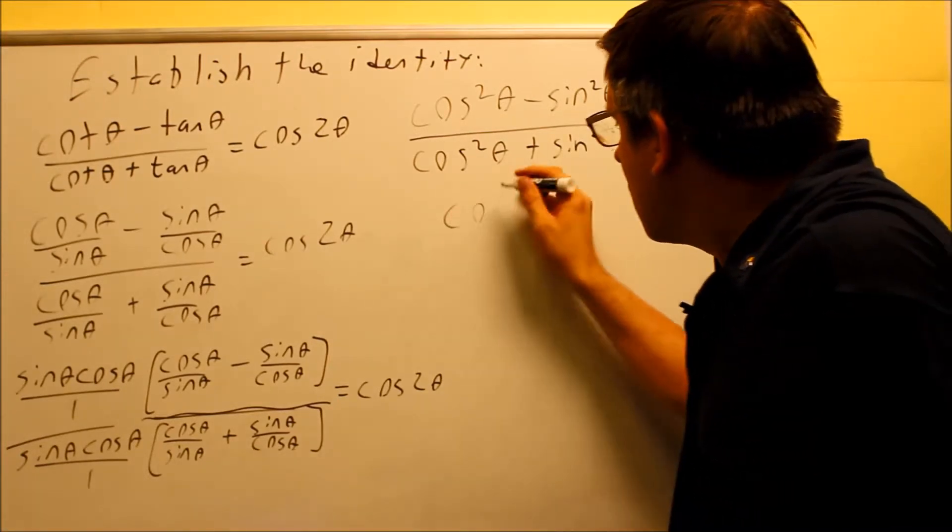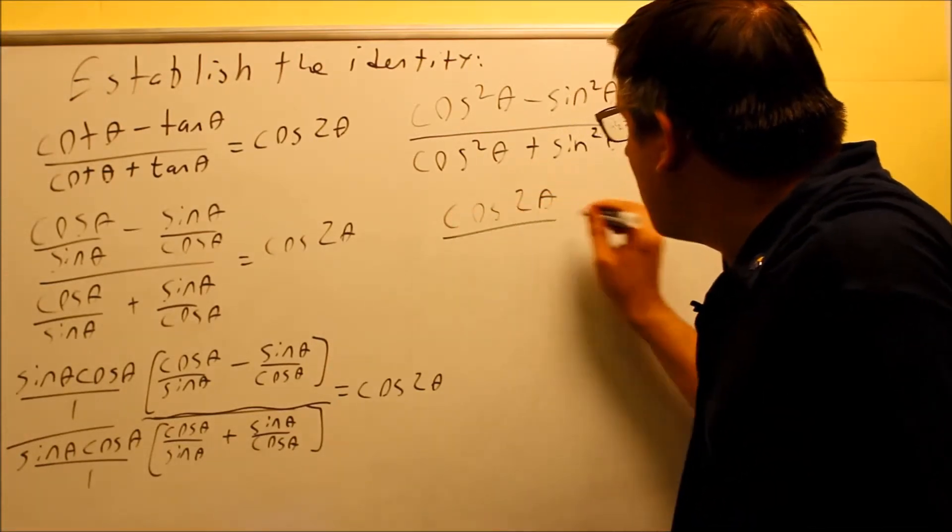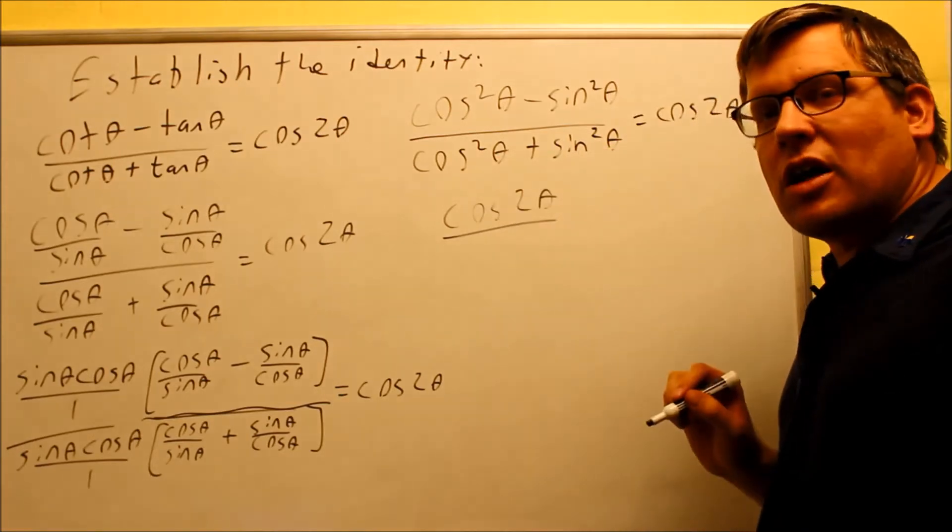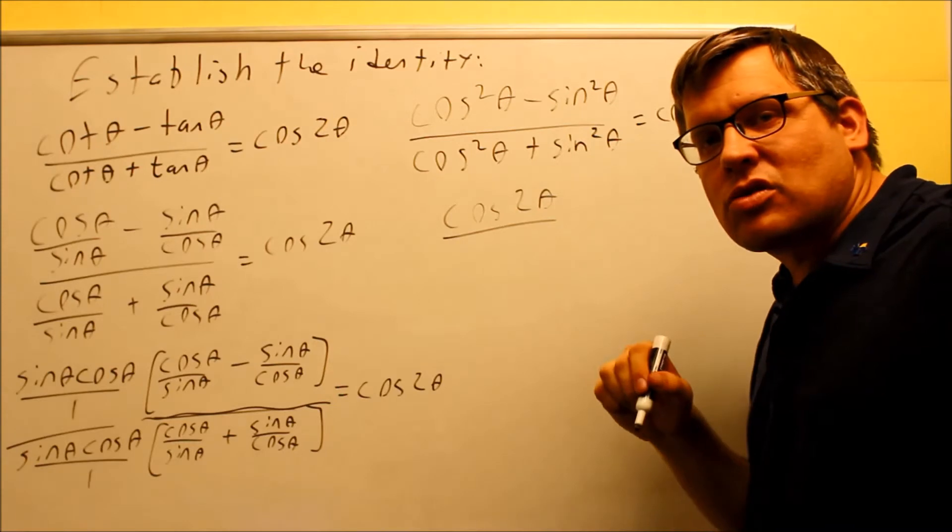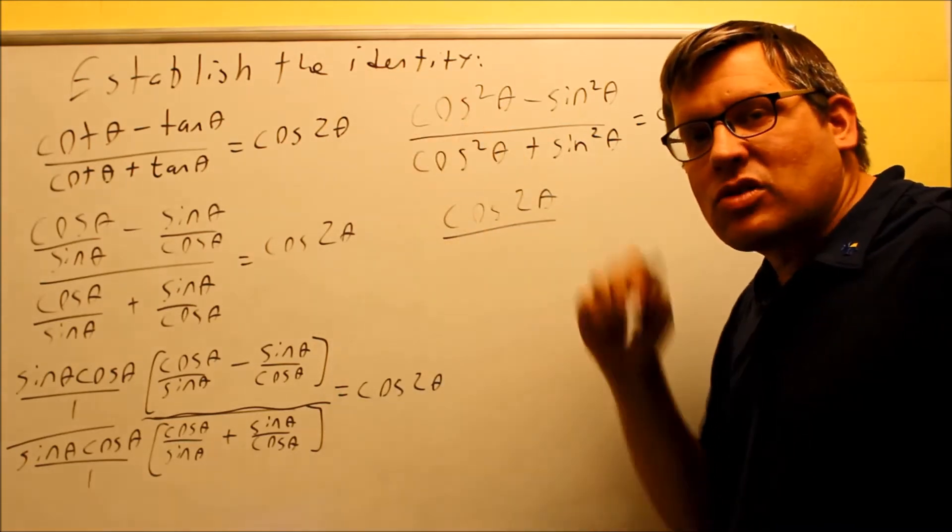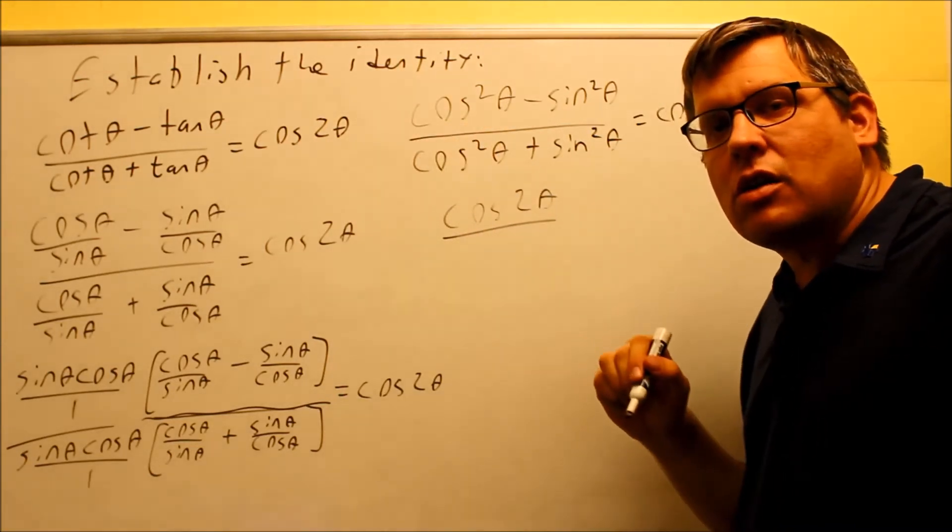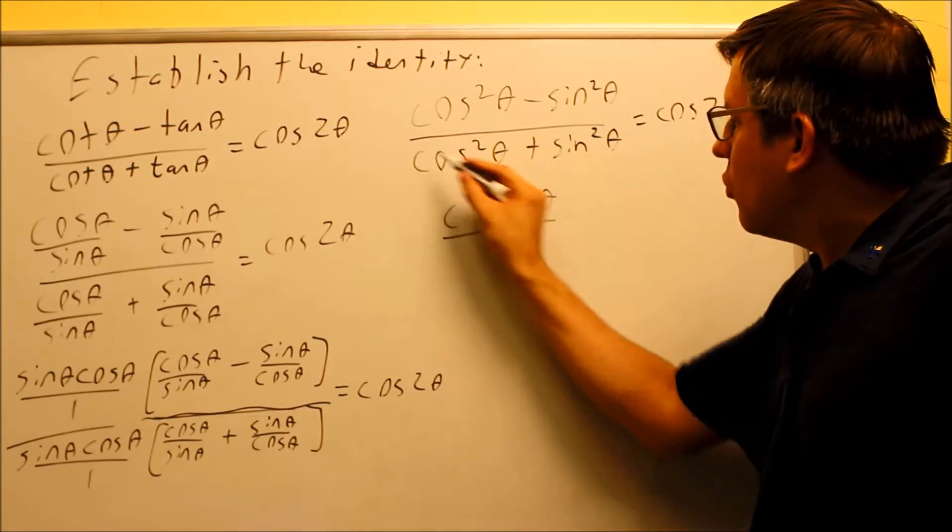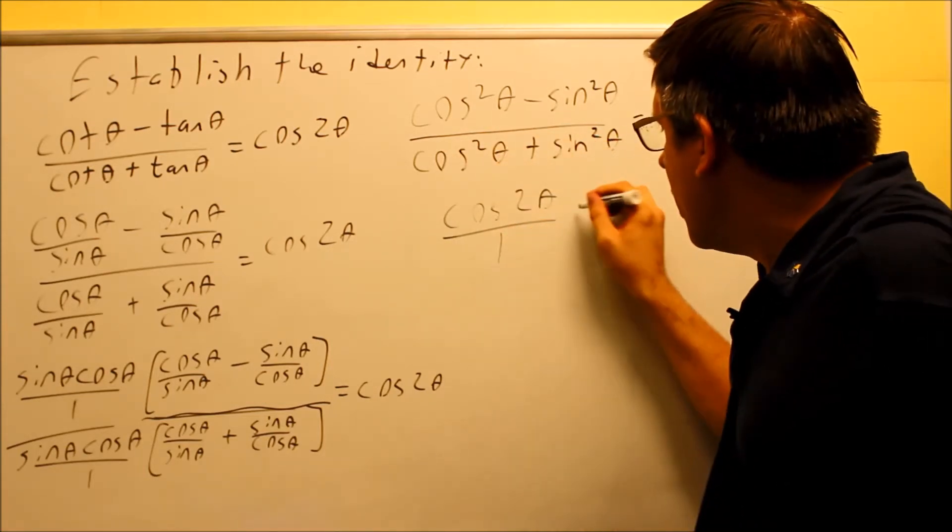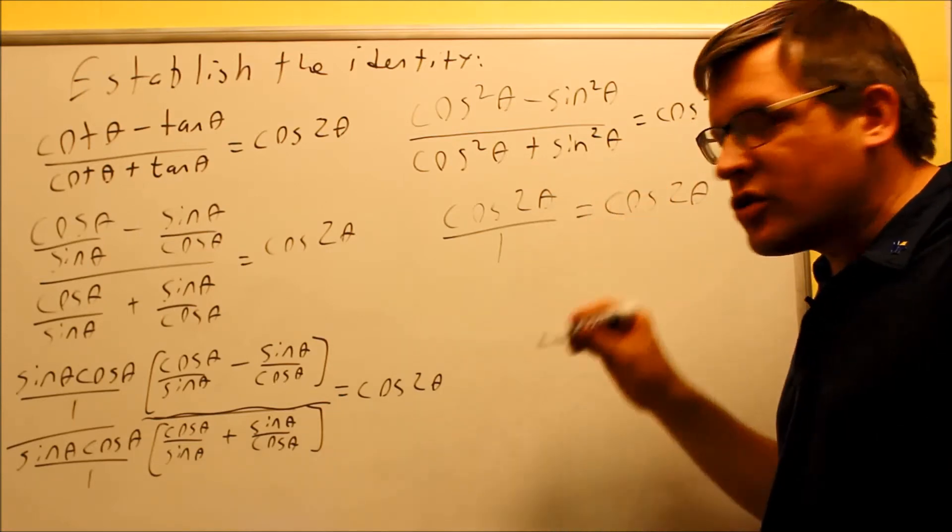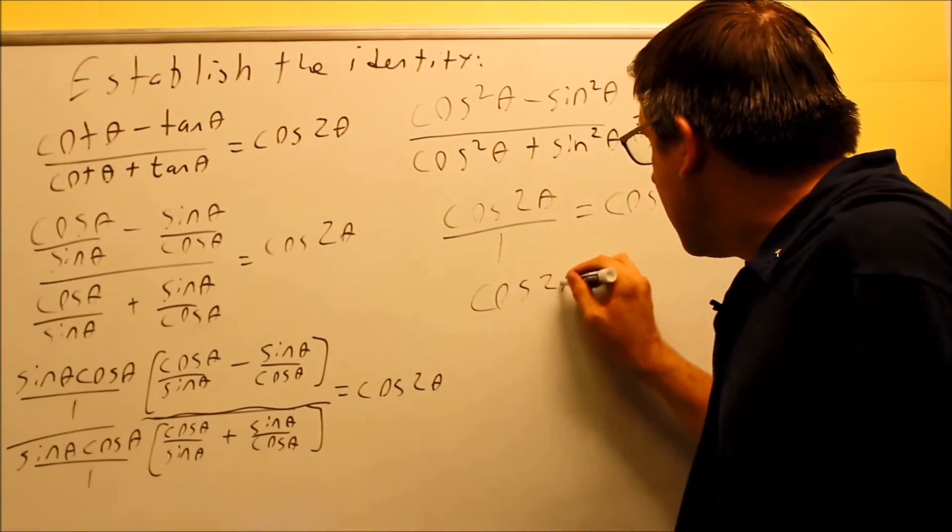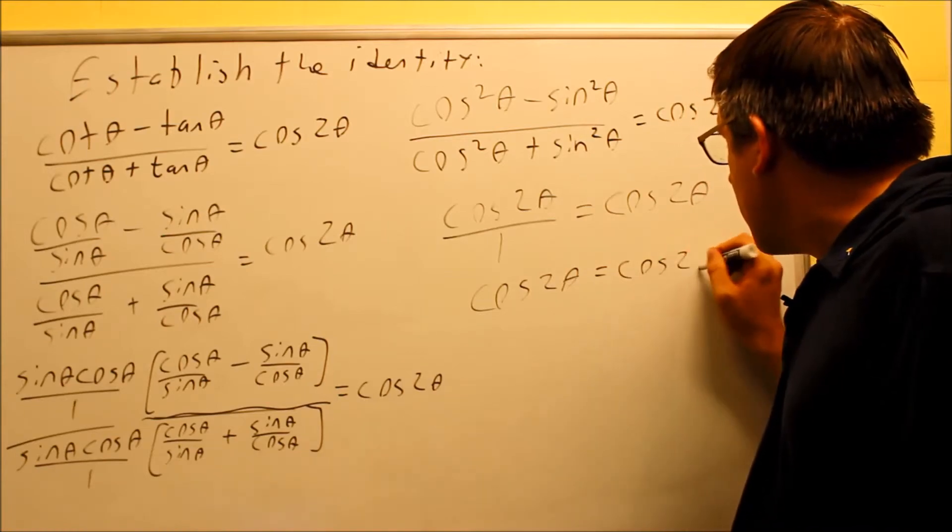So I end up with cosine 2θ on top. On the bottom, cosine squared plus sine squared, that's another identity that we talked about in the original session when we talked about how to establish the identity. We had that list of identities up here on the board, and one of them was this one here. Cosine squared plus sine squared, that's one. So now that I've done that, cosine 2θ over one is itself, so therefore I get both sides to be equal to each other.